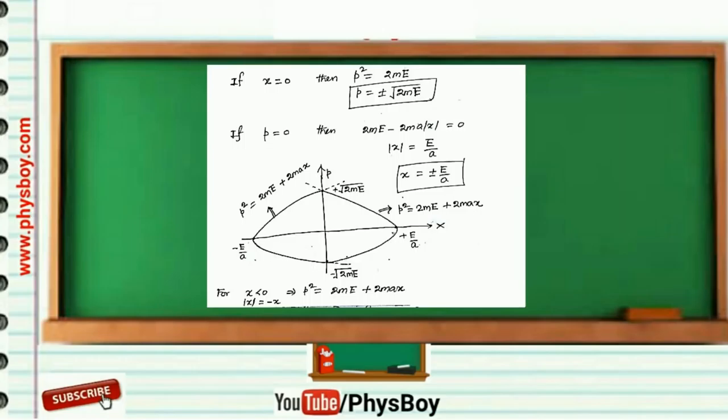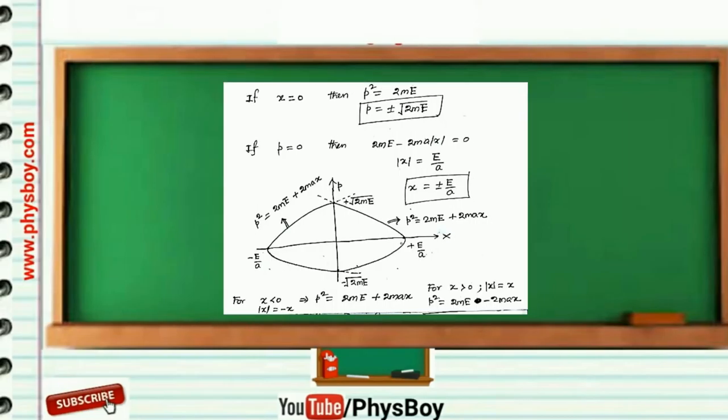When x < 0, then |x| = -x, so p² = 2mE + 2max. This is the equation of a parabola shown on the left side of the above figure.